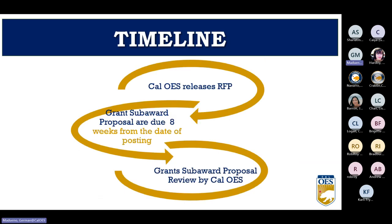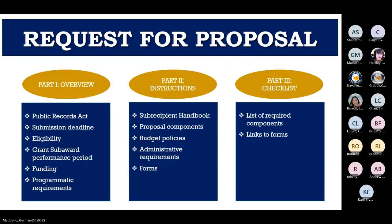CalOES released the Listos California Tribal Grant Program Request for Proposals on January 8th. Applicants have approximately eight weeks to put the proposal packet together from that day. Once complete, applicants will need to email a copy of the proposal packet to the Listos Grant Unit at listosgrants@caloes.ca.gov.